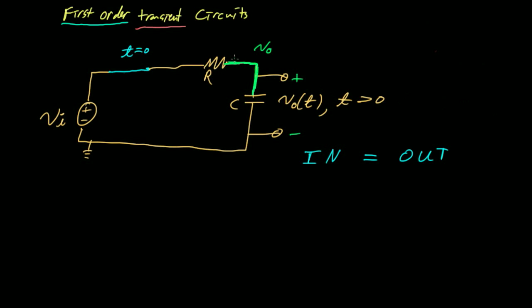Let's choose current directions. We're going to say that current IR flows from left to right across our resistor, and current IC flows from the top to the bottom across our capacitor.